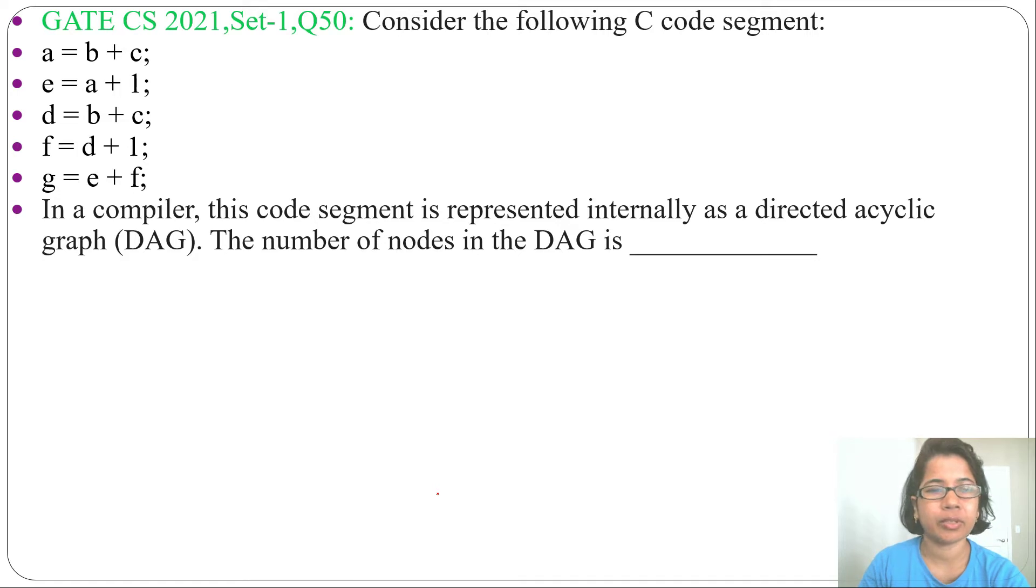Let me first analyze this code segment. First statement: a equals b plus c. Second statement: e equals a plus 1. Third statement: d equals b plus c. Within the first statement and third statement, b and c is not updated, so this b plus c is the same as this b plus c. So we can write d equals a.